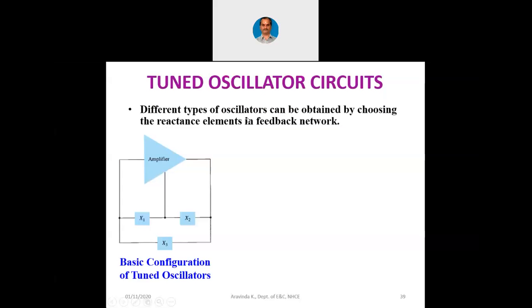We have something called tuned oscillator circuits. Different types of oscillators can be obtained by choosing the reactance elements in the feedback network. In our previous circuit we had one resistive and one reactive element, but here we have X1, X2, and X3 connected in a slightly different way. In the feedback network, the intersection between X1 and X2 is the ground point, and we have a parallel element X3 that goes directly from output to input.